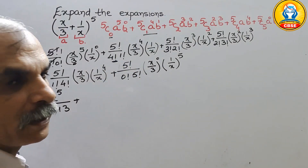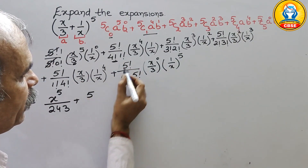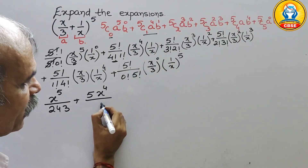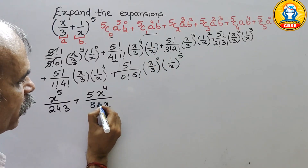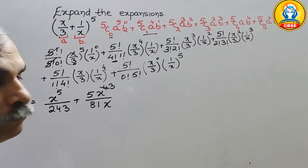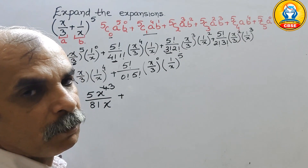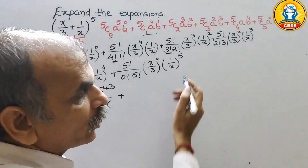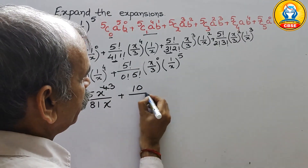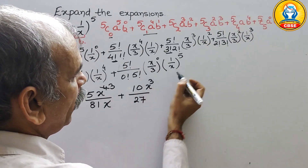3 to the power of 5 is 243. For the next term, 5 factorial divided by 4 factorial gives 5. So we get 5 times x to the power of 4 divided by 3 to the power of 4, which is 81, times 1/x. So x to the power of 4 reduces to x to the power of 3. Next, 5 factorial in terms of 3 factorial gives 5 times 4 equals 20, and 2 factorial is 2, so 20 divided by 2 is 10.